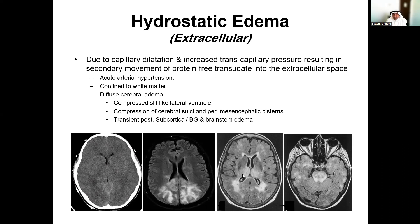Hydrostatic edema involves both white and gray matter and is secondary to sudden acute arterial hypertension. It may also involve the brainstem. A hallmark is associated generalized brain swelling, evidenced by effacement of the cortical sulci, compression of major fissures and ventricles, and a generalized slight reduction in brain parenchyma density. These changes are transient and reversible with appropriate medical therapy, leaving no permanent scarring or damage, and show diffuse mild reduction of signal intensity with preservation of gray-white matter differentiation.